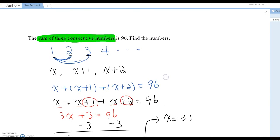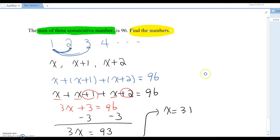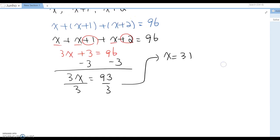But, the question asks you, find the numbers, then you need to set up all three numbers. So, since we got the smallest number is 31, so next one 32, and the last one 33, that will be the answer for this problem.